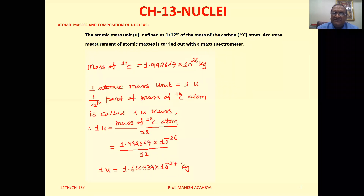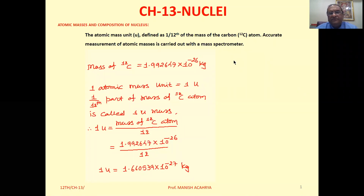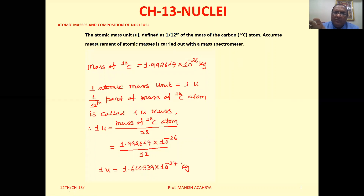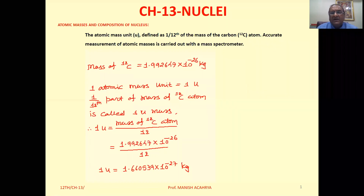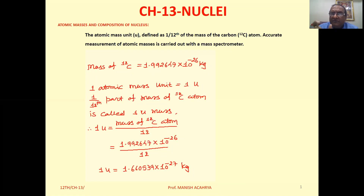Some elements have species for which the chemical properties are the same — they lie at the same place, they occupy the same place in the periodic table — but their masses are different. This type of species of an element are known as isotopes. Even the lightest one, hydrogen, also has isotopes like deuterium and tritium. In the formation of a particular element, the composition of these isotopes is different.